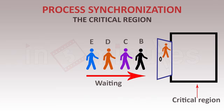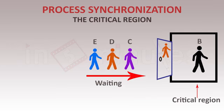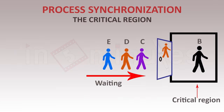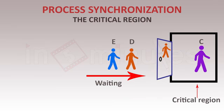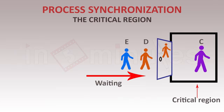The moment A finishes its job, A comes out, and depending on some scheduling algorithm, person B enters. Now C, D, and E are waiting. When B finishes, B exits and C gets in — the system repeats. The basic idea is that the critical region is a specialized region accessed one at a time; this concept is known as mutual exclusion.